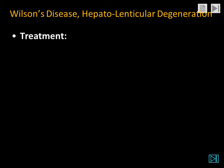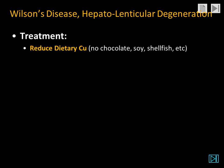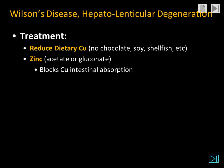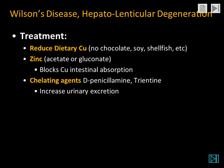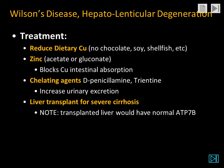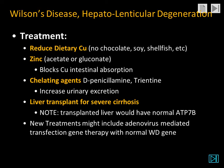The treatment of hepatolenticular degeneration, or Wilson's disease, begins with reducing dietary copper. Patients can be given a zinc supplement, which will block copper absorption from the intestine. Chelating agents are now a second line of treatment with D-penicillamine or trientine, which increase urinary excretion. If there is severe cirrhosis, liver transplantation may be required. The transplanted liver should have a normal ATP7B, and therefore normal metabolism and biliary excretion of copper.